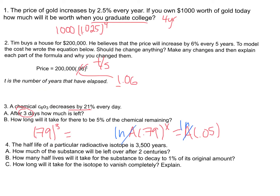Number four: the half-life of a particular radioactive isotope is 3,500 years. How much of the substance will be left after two centuries? It's important to note how long a century is — think of 'per cent,' one per hundred. A century is 100 years, so two centuries is 200 years. Now think: how many half-lives have gone by in 200 years? Not even close to one. Specifically, 200 divided by 3,500.